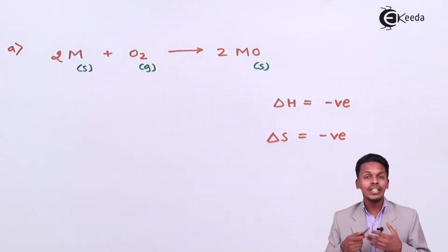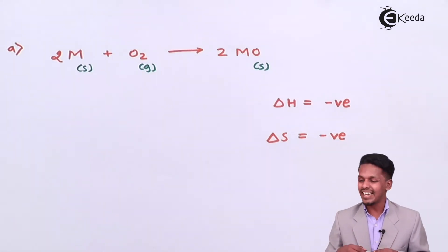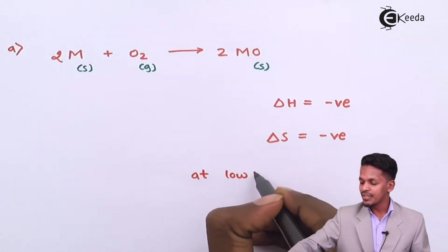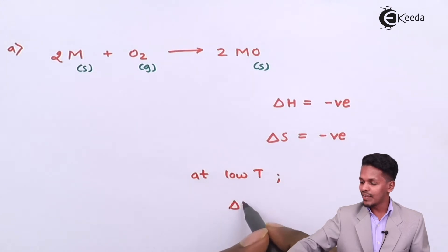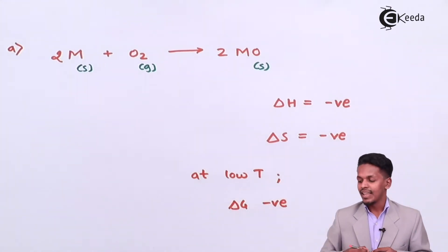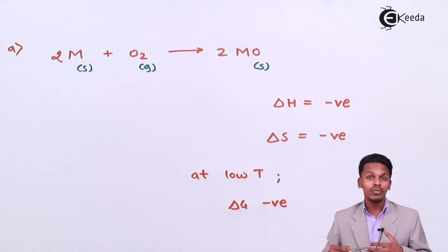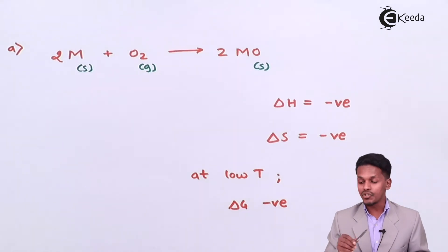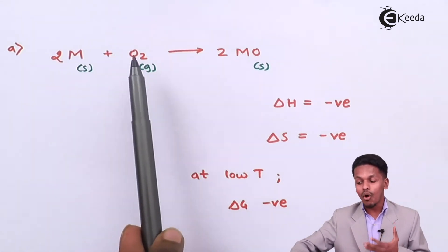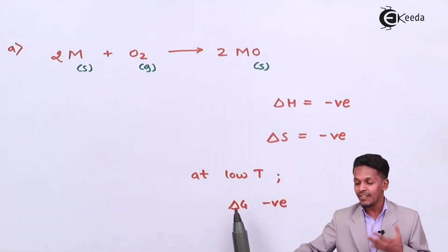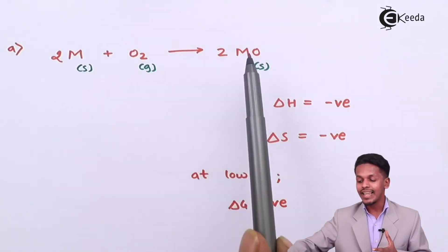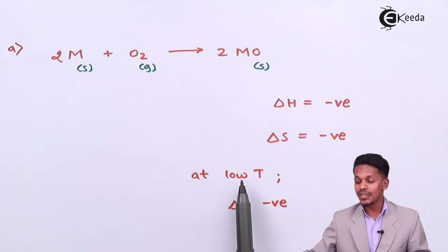Using the formula delta G = delta H − T·delta S, with both delta H and delta S negative, delta G will be negative only if the temperature is low. At low temperature the delta G value will be negative, but it will turn positive if we increase the temperature. This means at low temperature, metal can easily combine with oxygen to form metal oxide. So the formation of metal oxide is very feasible at low temperature.